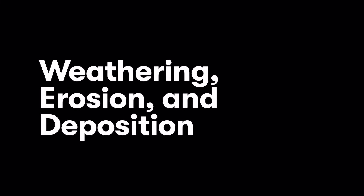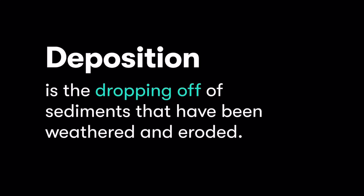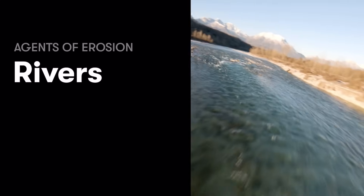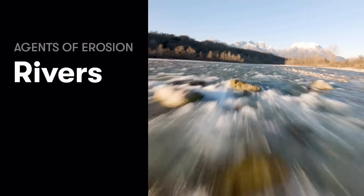Finally, deposition is going to occur — this is the dropping off of sediments that have already been weathered and eroded. Once they've been broken down and moved, they get dumped somewhere, and that process is known as deposition. Today we're going to focus on one particular agent of erosion, and that's rivers or flowing water on the surface of the earth.